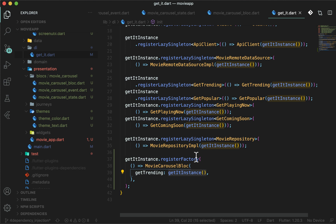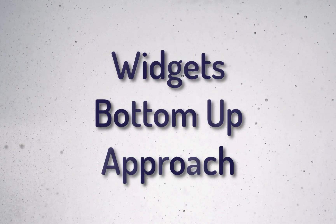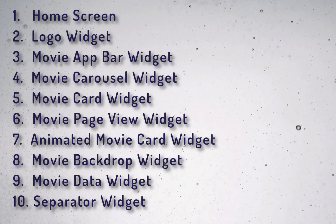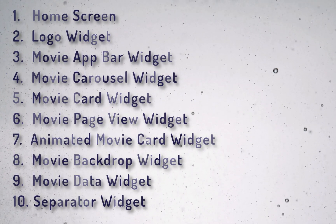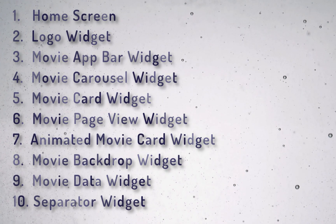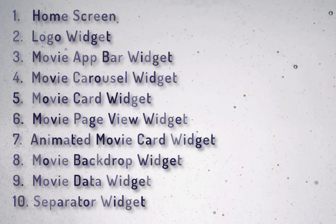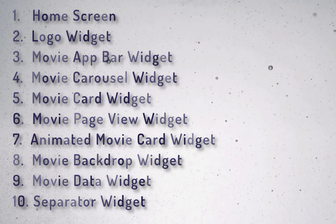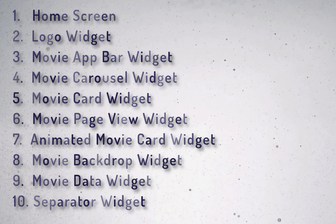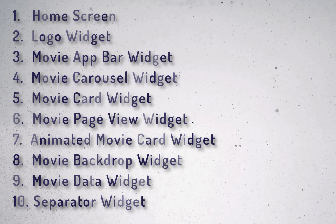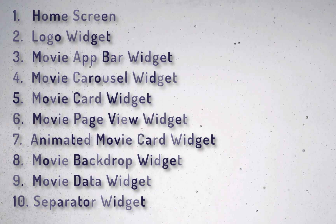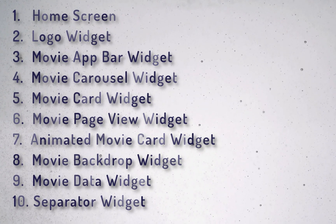We are ready with the bloc, colors, fonts, and dimensions. Let's jump to the UI creation now. We will create the widgets in a bottom-up approach. Here is the list of all the widgets that we will be doing in this video: HomeScreen, LogoWidget, MovieAppBarWidget, MovieCarouselWidget, MovieCardWidget, MoviePageViewWidget, AnimatedMovieCardWidget, MovieBackdropWidget, MovieDataWidget, and SeparatorWidget.